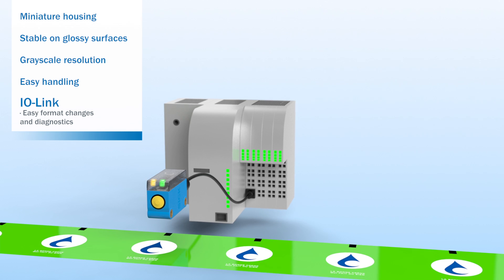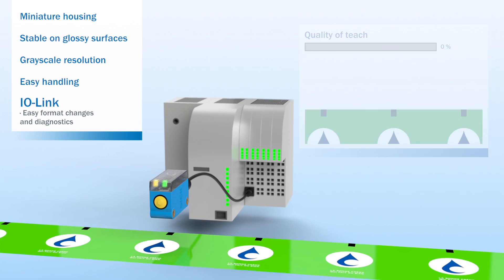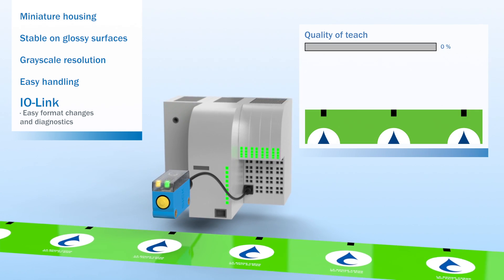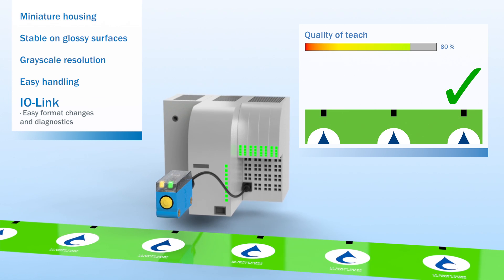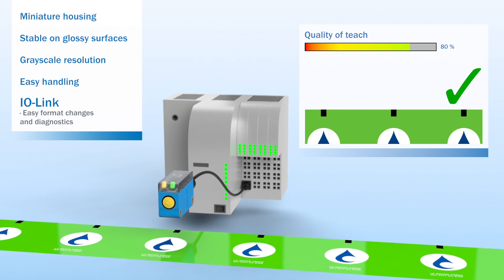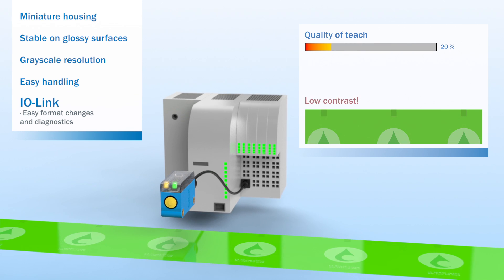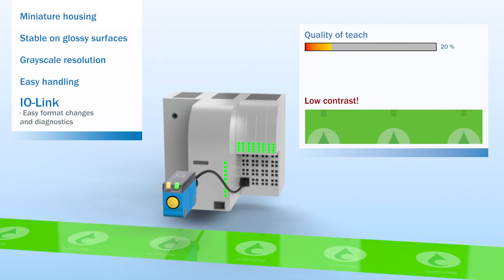The sensor's Quality of Teach property returns a value that is indicative of process reliability. If the value falls below a certain level, a safety message can be output via the control system, for example.